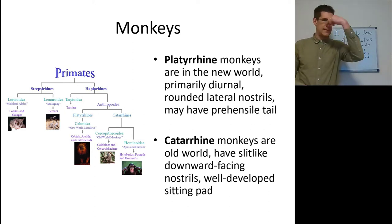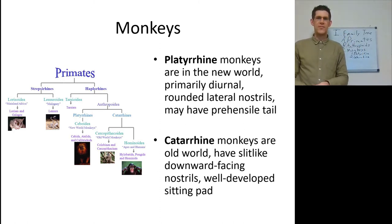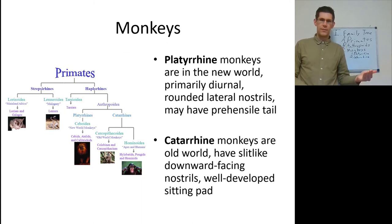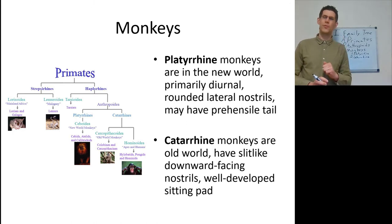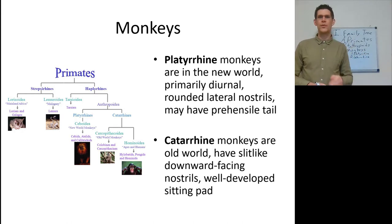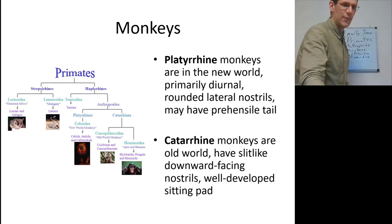Catarrhine monkeys have slit-like downward-facing nostrils and a well-developed sitting pad — you could say catarrhine monkeys have booty. Not a prehensile tail, so they are capable of sitting down on branches, not hanging from them. The big distinction is that platyrrhine monkeys are new world. If you want some mystery, find out how the platyrrhine monkeys got to the new world, because monkeys are generally an old world thing.